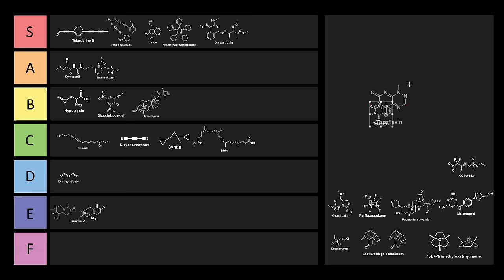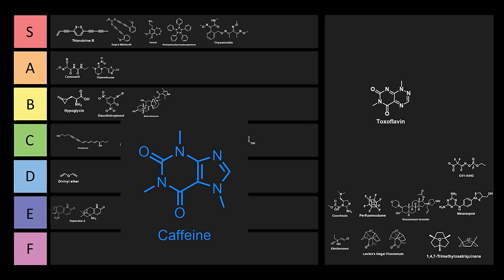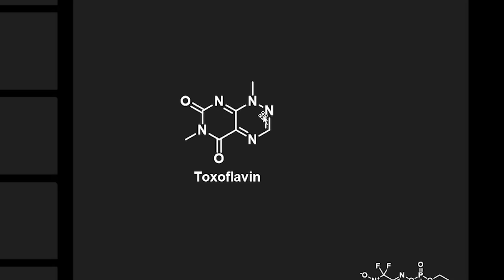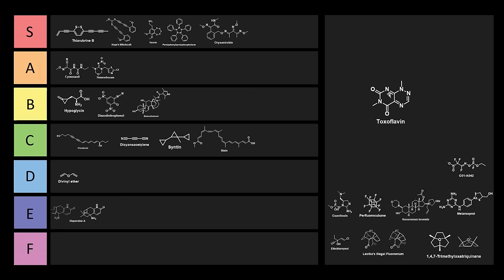Here we have Toxoflavin. Toxoflavin looks kind of like cursed caffeine, and this is a toxin produced by a variety of bacteria, including Burkholderia gladoli. This has antibiotic properties. I think this is pretty cursed. Just look at how many nitrogens are in this molecule. There's barely any hydrogens here. There's like 7 hydrogens and 5 nitrogens. This one's pretty cursed. I think this is like an A-tier chemical overall. Pretty cursed.